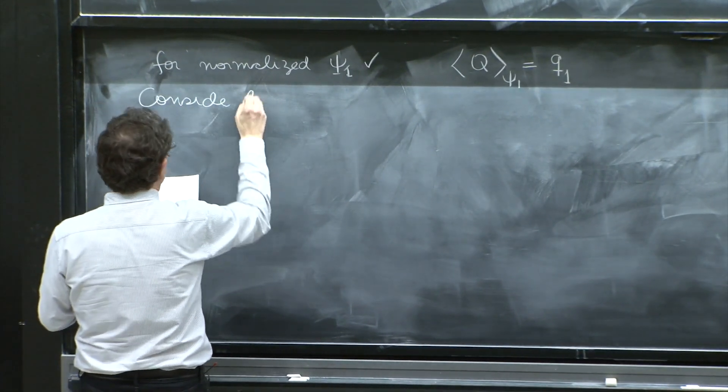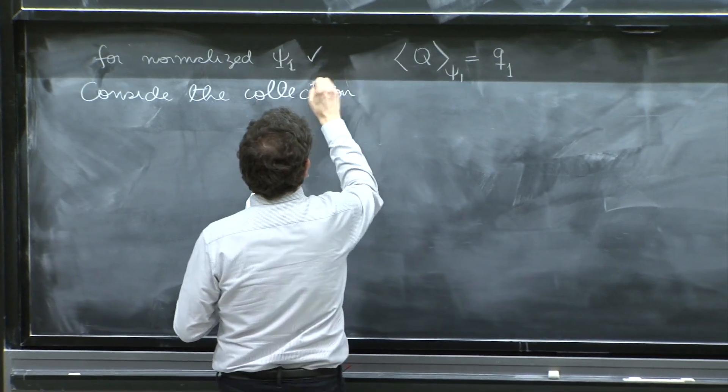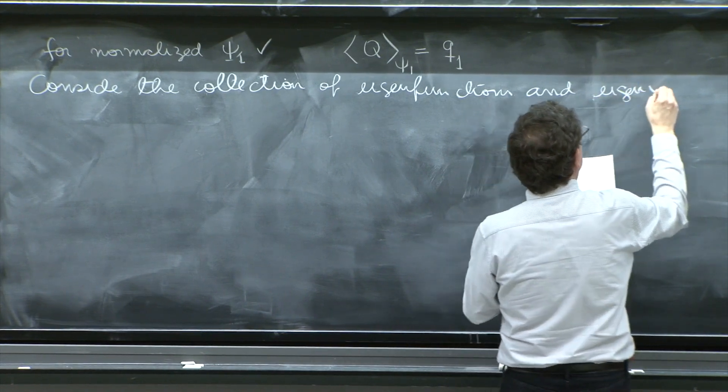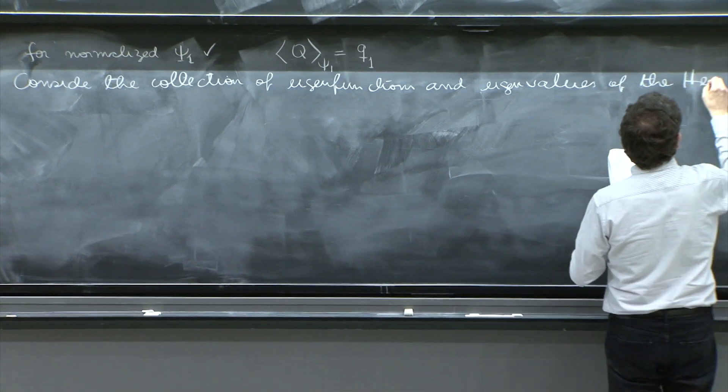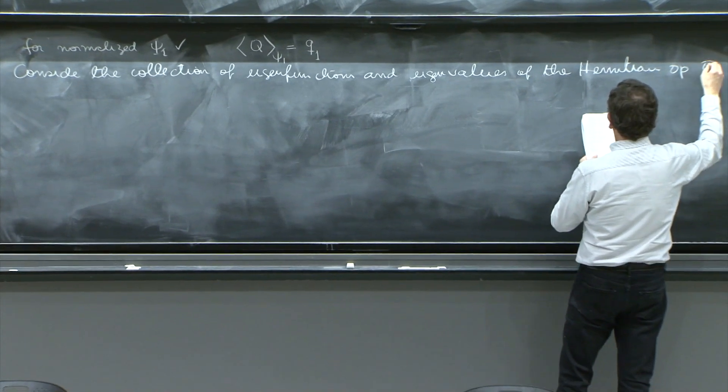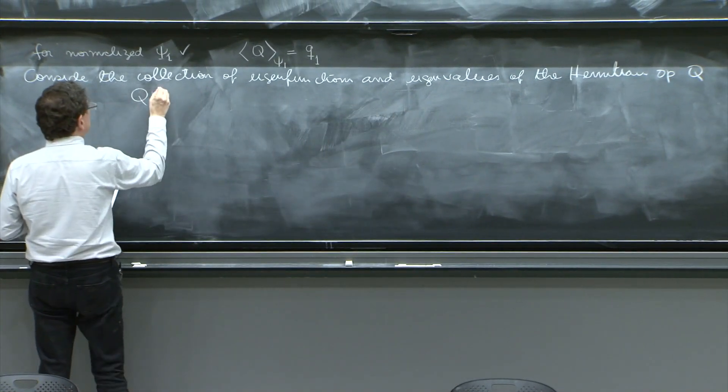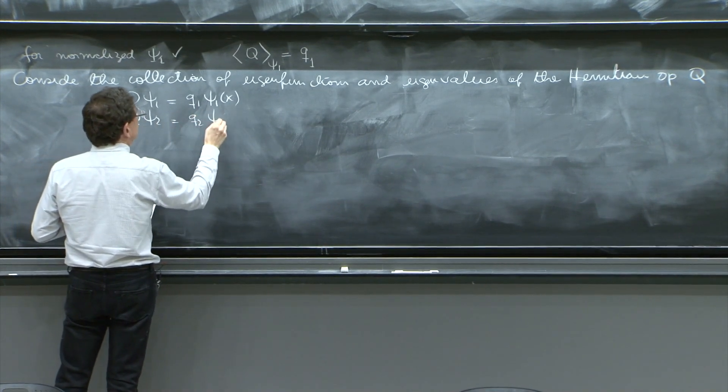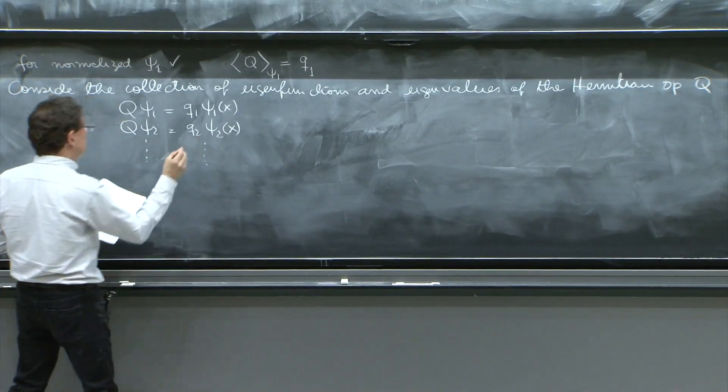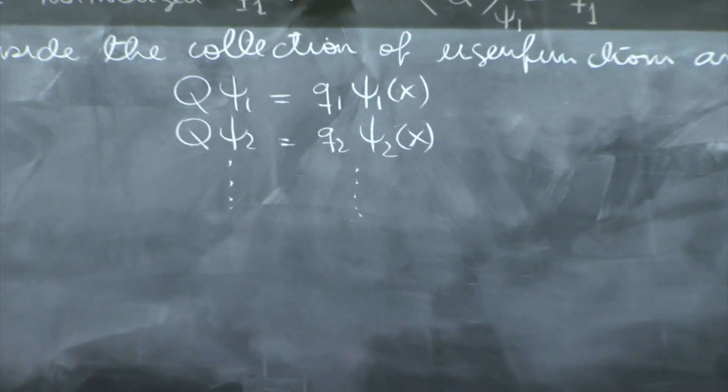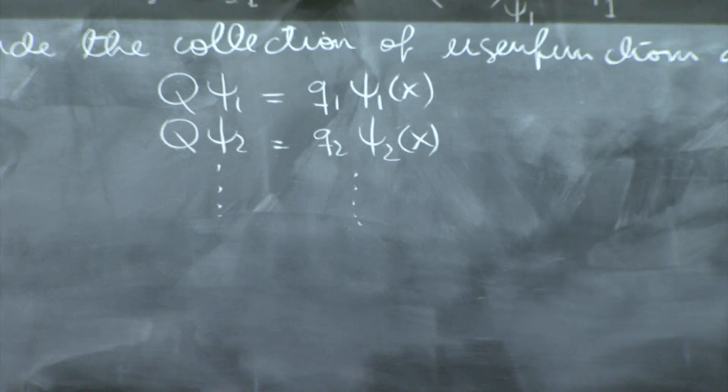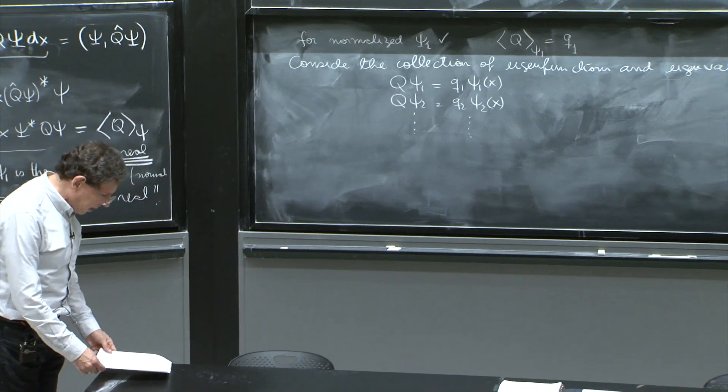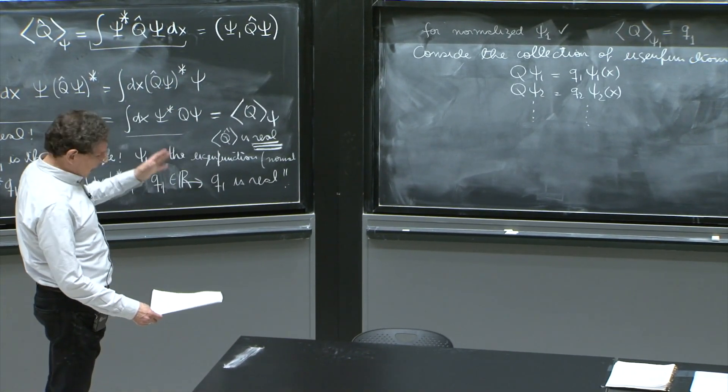Consider the collection of eigenfunctions and eigenvalues of the Hermitian operator Q. And then I go and say Q psi 1 equals q1 psi 1, Q psi 2 equals q2 psi 2, and I actually don't specify if it's a finite set or an infinite set. The infinite set is a tiny bit more complicated, but the result is true as well and we can work with it.